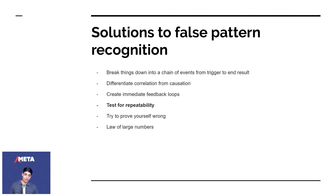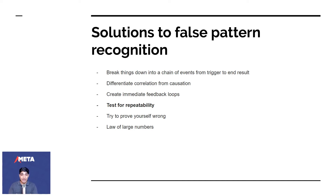What are the solutions to false pattern recognition? You break down things into a chain of events from trigger to end result. Differentiate correlation from causation — as we study the statistics part of this course, you'll understand how to do that. You have to create immediate feedback loops; you can't have that data six months later. You test for repeatability — is this repeatable? Can it happen again? If you keep correlating cutting your hair to thunderstorms, cut your hair again and see if the thunderstorm comes. If it happens 10 days in a row, then you start creating a pattern. But in most companies, things are done once or twice and then conclusions are made — you cannot make conclusions from doing something once or twice.